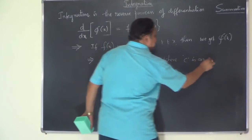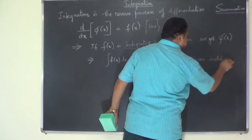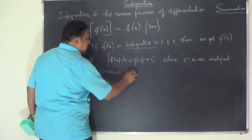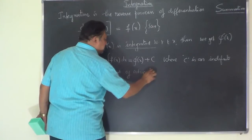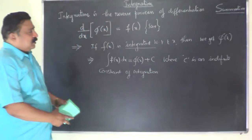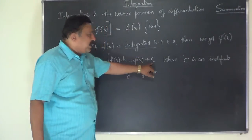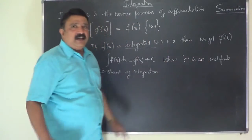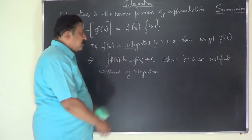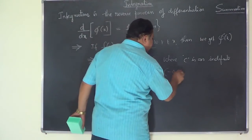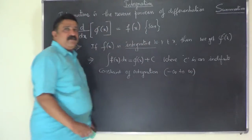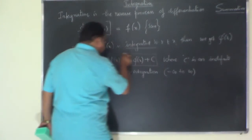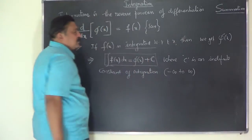Here c is the indefinite constant of integration. In all problems, after integration is done, it is customary to add c, which represents the constant of integration. Its value is indefinite — it does not have a definite value, and it can range from minus infinity to plus infinity.